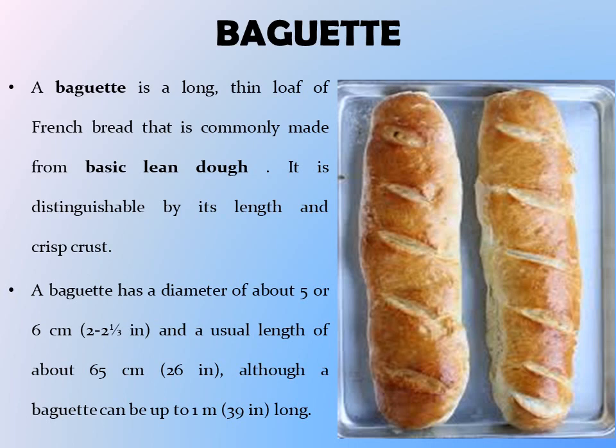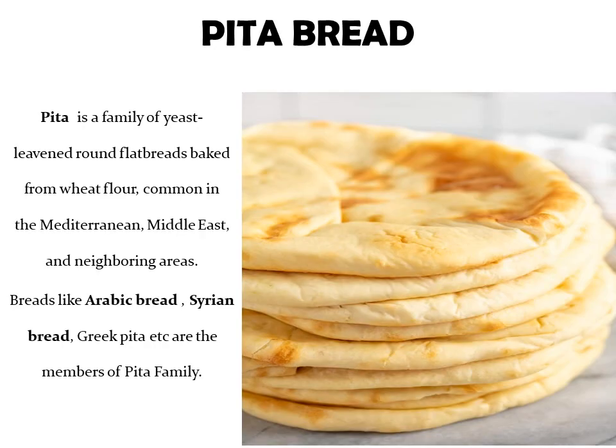On number nine, we have pita. Pita is a family of yeast-leavened round flatbreads baked from wheat flour, common in the Mediterranean, Middle East, and neighbouring areas. Breads like Arabic bread, Syrian bread, and Greek pita are members of the pita family.